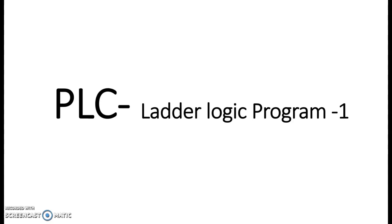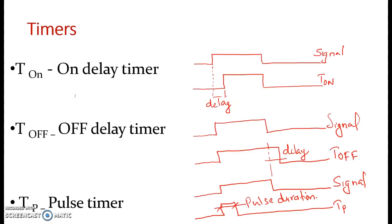In this session we are solving the first problem in ladder logic programming. Before starting, we are studying various timers used in ladder logic programs. There are three timers used: one is TON, otherwise known as on-delay timer; the second one is TOFF, that is off-delay timer; and the third one is the pulse timer. We will see them one by one.